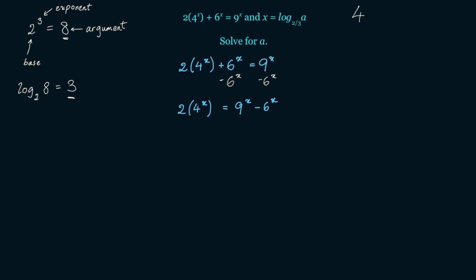Now, we know that 4 is equal to 2 squared, so 4 to the x equals 2 to the 2x, which is also equal to 2 to the x squared. Let's substitute that into our equation: 2 times 2 to the x times 2 to the x equals 9 to the x minus 6 to the x.